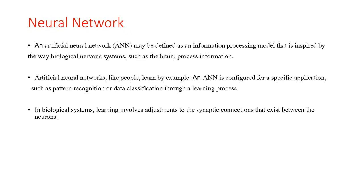Artificial Neural Networks, like people, learn by examples and are configured for a specific application such as pattern recognition or data classification through a learning process. In a Neural Network there are two parts: Artificial Neural Network and Biological Neural Network. In a biological system, learning involves adjustment to the synaptic connections that exist between the neurons.